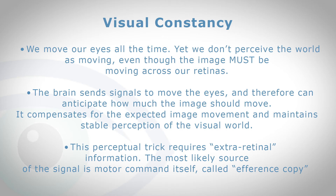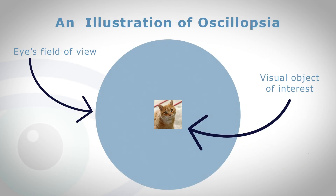The brain seems to work out, or anticipate, how much the image should move and then compensates for it, so that the perception of the world remains steady and stable. This perceptual trick requires extra information, which we call extra-retinal information — outside the eye. The most likely source of this information is the motor command itself: efference copy. So when the brain makes a movement, it knows what the command was and uses that to compensate for the perceptual movement so that you see the world as being steady. So even though the image moves across the retina, it does not mean you will necessarily see things as moving.